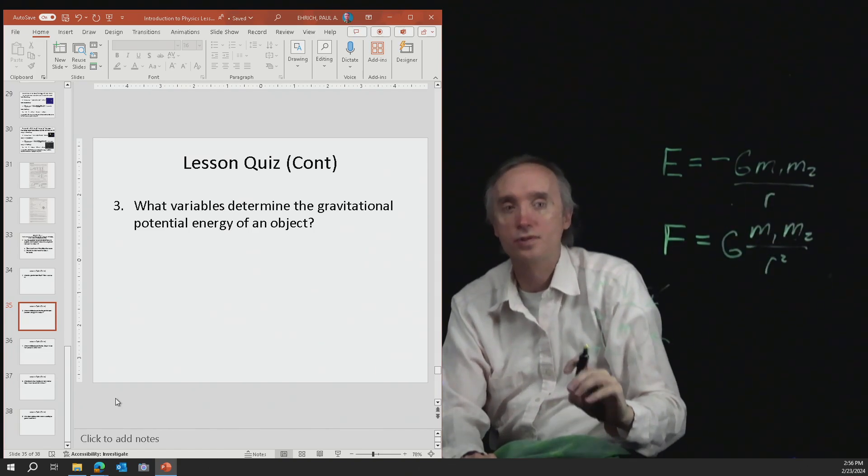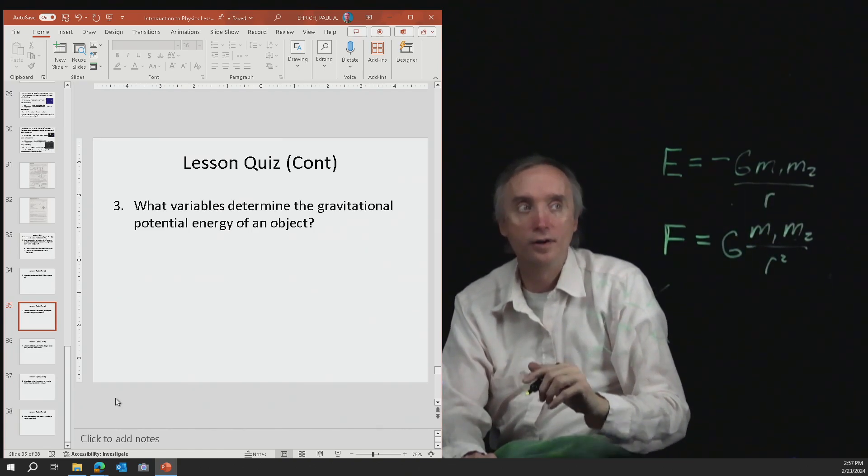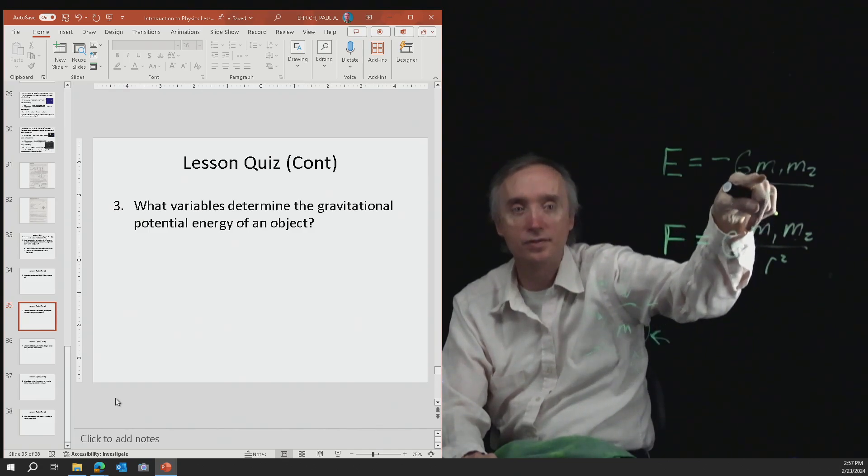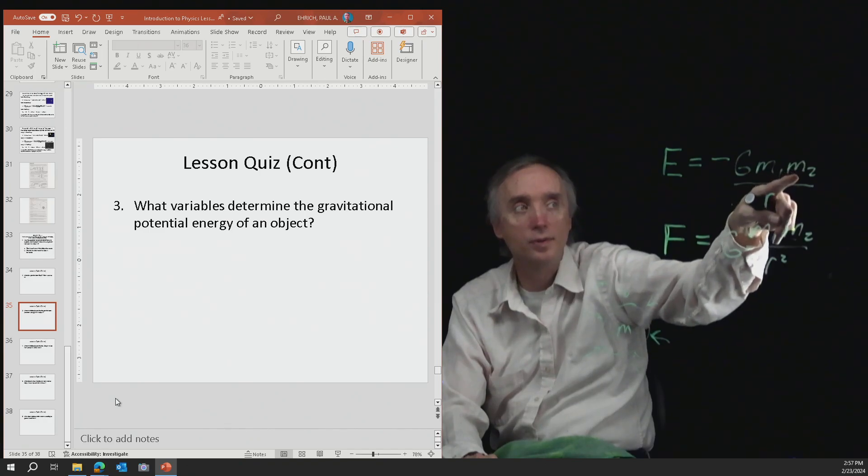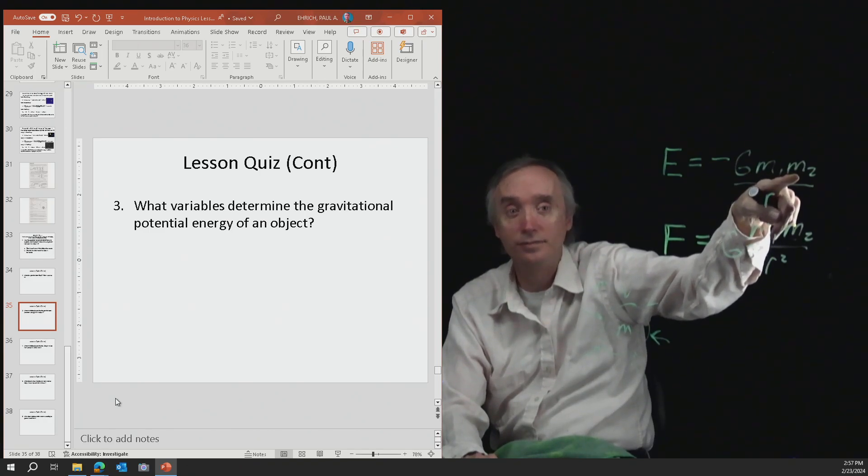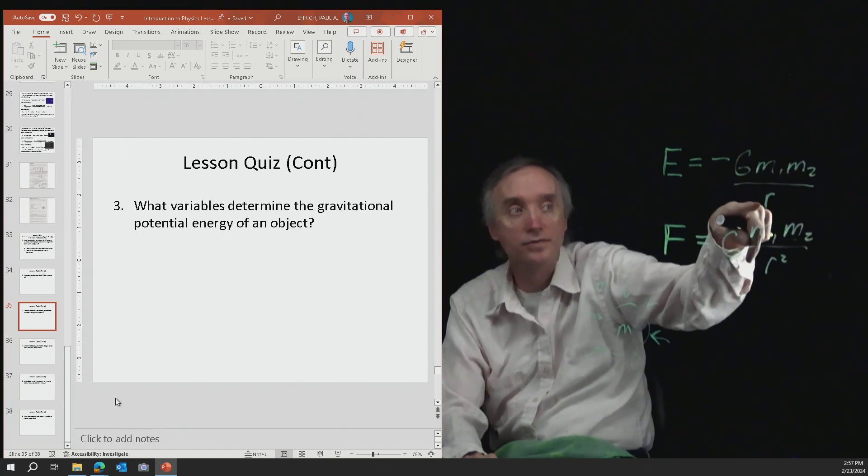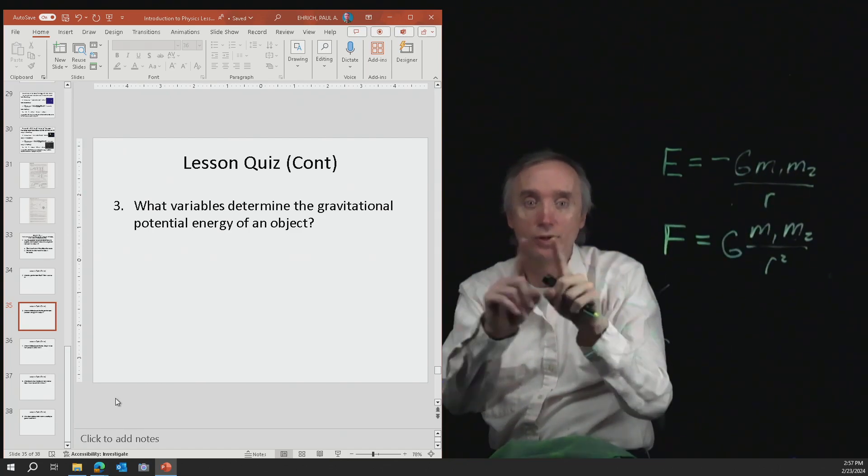So the variables are going to be the mass of the object that's going around and then it's going to be the mass of the thing that's going around. And then it's also going to depend on the distance between the two objects.